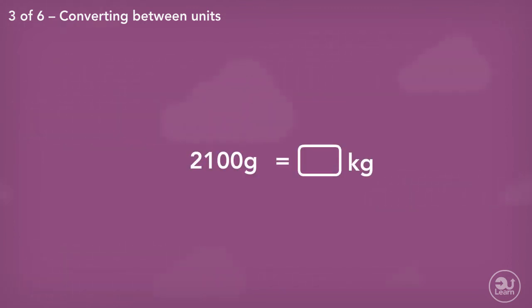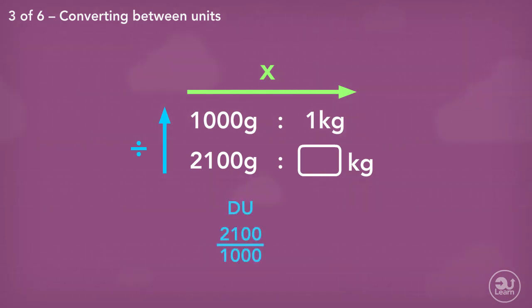Let's convert 2,100 grams to kilograms. The relationship is 1,000 grams make 1 kilogram. Or 1,000 grams to 1 kilogram. Again, using our Duma method, divide up, multiply across, we can find our answer. 2,100 divided by 1,000 times by 1 gives us 2.1 kilograms.